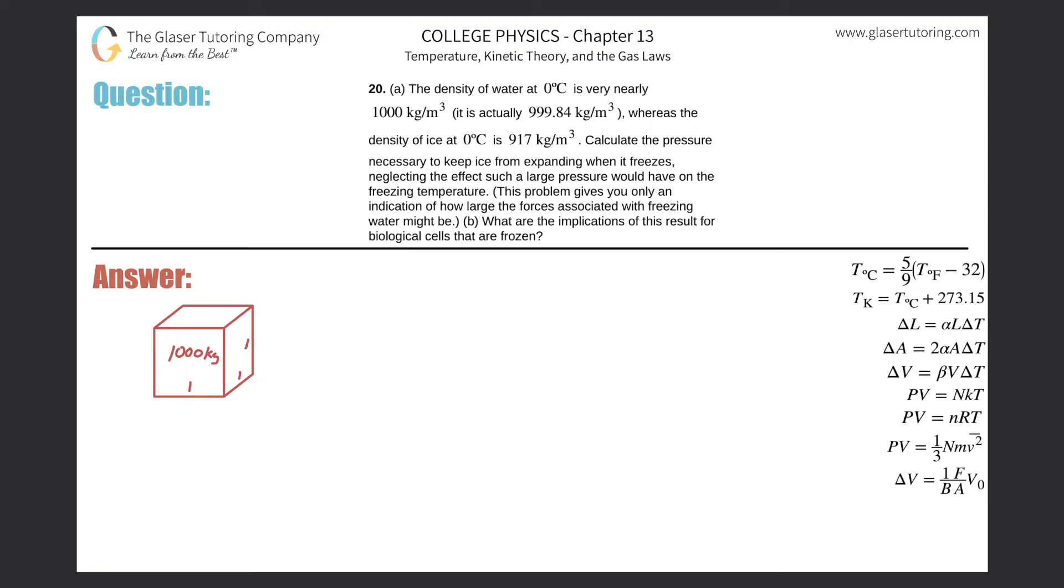Number 20, letter A. The density of water at 0 degrees Celsius is very nearly 1000 kg per cubic meter. It's actually 999.84 kg per cubic meter, whereas the density of ice at 0 degrees Celsius is 917 kg per cubic meter. Calculate the pressure necessary to keep ice from expanding when it freezes, neglecting the effects such as a large pressure would have on the freezing temperature.